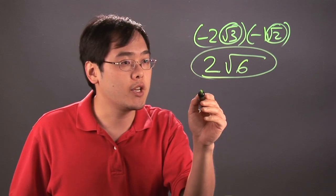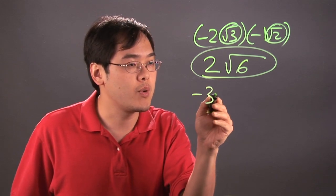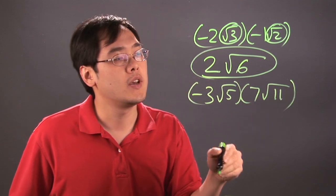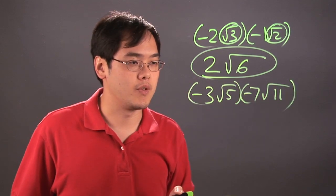Now another illustration really quickly, if you have negative 3 square root of 5 times negative 7 square root of 11.